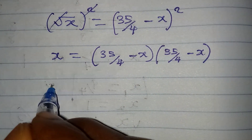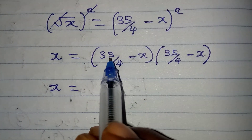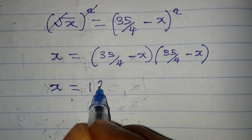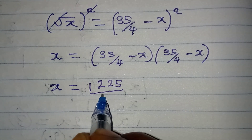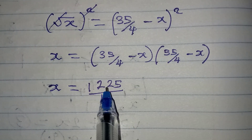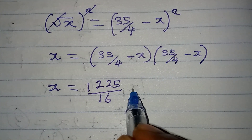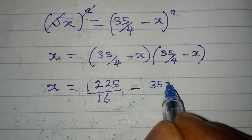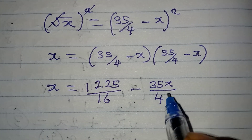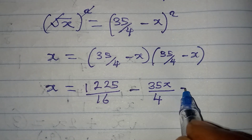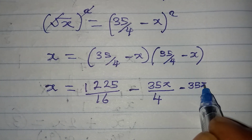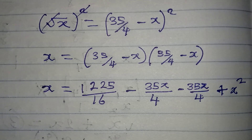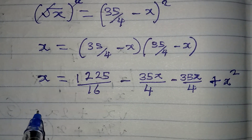Let us open the bracket: x equals 35/4 times 35/4, which gives 1225 over 16 (since 35×35=1225 and 4×4=16), then minus 35x/4, then minus 35x/4 again, and plus x squared.